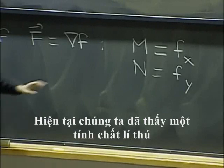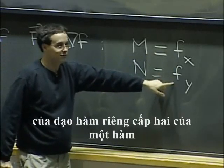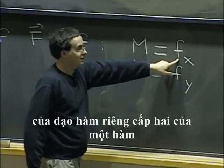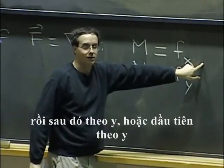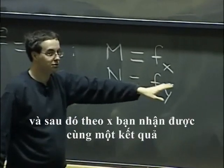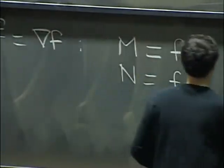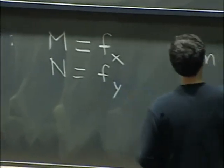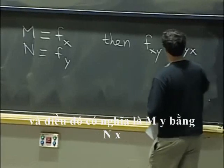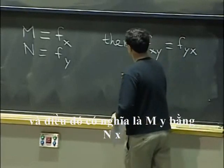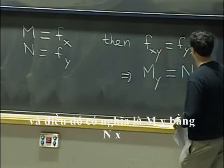Now, we have seen an interesting property of the second partial derivatives of a function: if you take the partial derivative first with respect to x, then with respect to y, or first with respect to y, then with respect to x, you get the same thing. So we know f sub xy equals f sub yx. And that means M sub y equals N sub x.